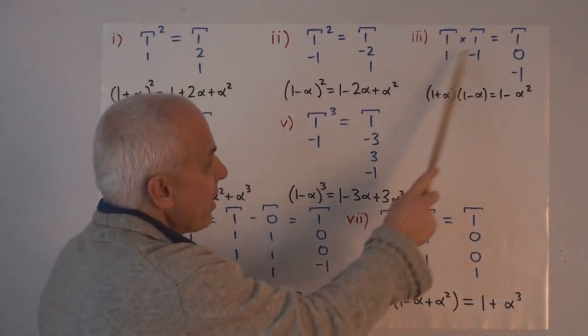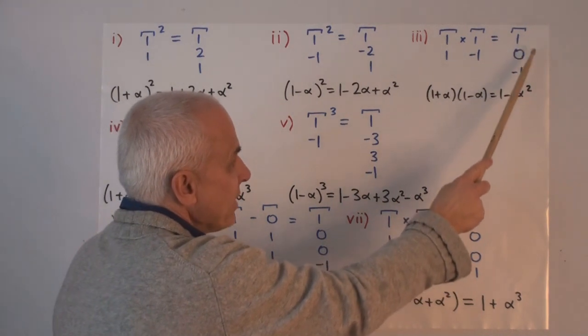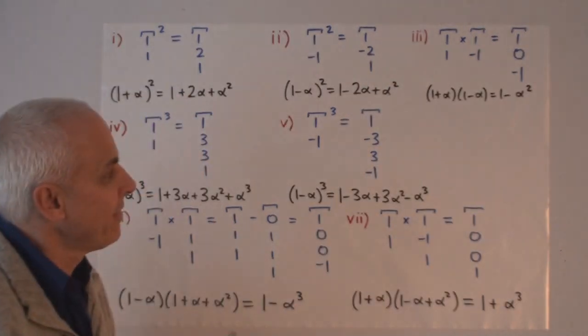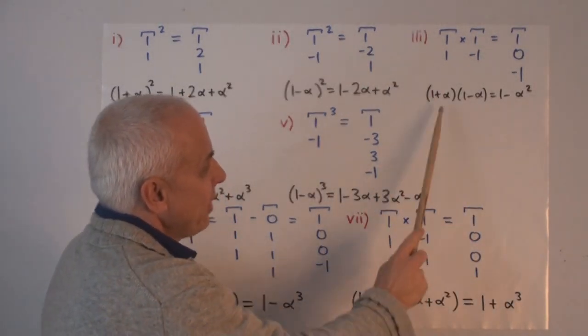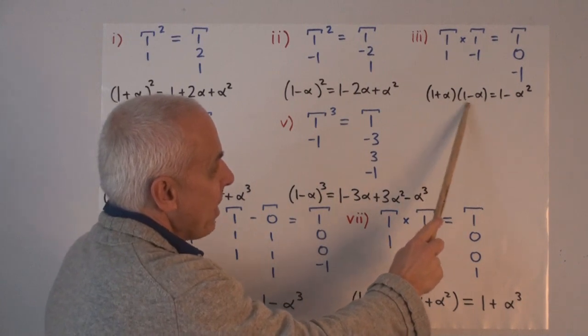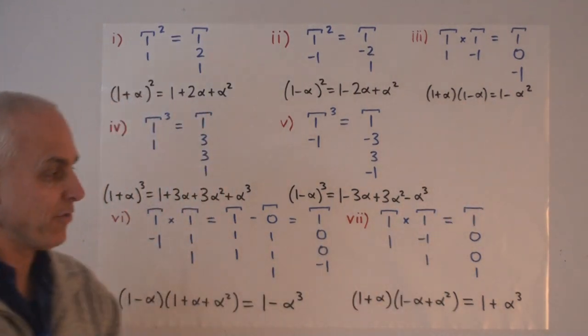Here we have 1, 1 times 1 minus 1 gives us 1, 0 minus 1. That corresponds to (1 + α)(1 - α) = 1 - α².